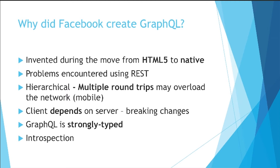So why did Facebook create GraphQL? Back around 2012, when they were making the move from HTML5 to native, they were encountering some problems using REST — probably some, or even the majority of them, specific to their implementation of REST. They needed a data fetching API that was powerful enough to describe all of Facebook, yet simple enough to be easy to learn and used by product developers. So they came up with GraphQL, which is hierarchical in nature. With REST, oftentimes multiple round trips are incurred fetching different data from different endpoints. Whereas in GraphQL, we don't think of data in terms of resource URLs and secondary keys and join tables — we think about it in terms of a graph of objects and the models we ultimately use in our apps.